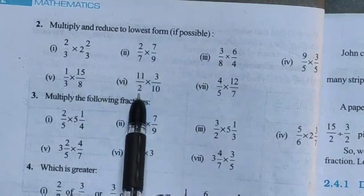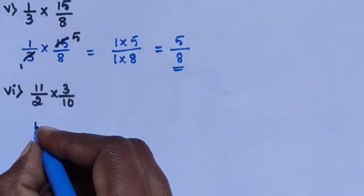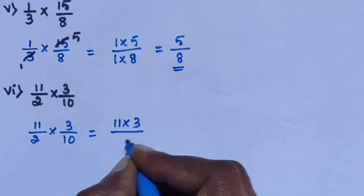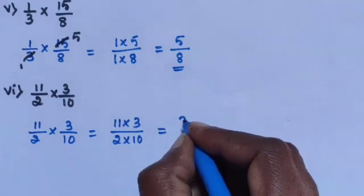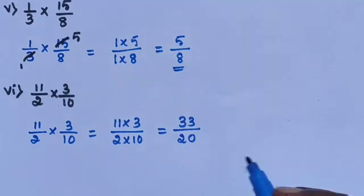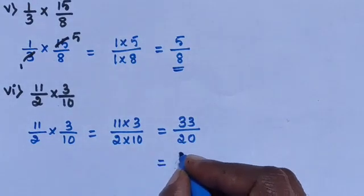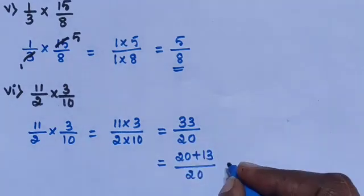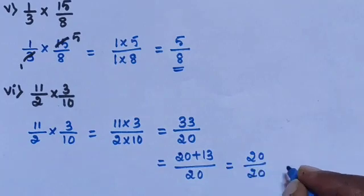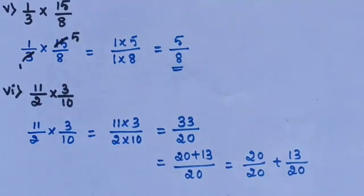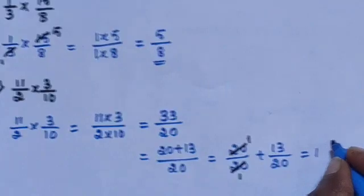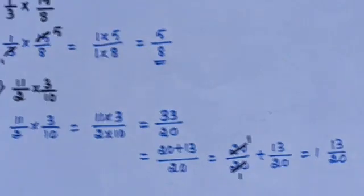Next, sub-question 6: 11/2 multiplied by 3/10. Directly multiply: 11×3 divided by 2×10. 11 threes are 33, 2 tens are 20. 33/20 is an improper fraction; convert to mixed fraction: 20+13 divided by 20, giving 20/20 plus 13/20. The answer is 1¹³⁄₂₀.